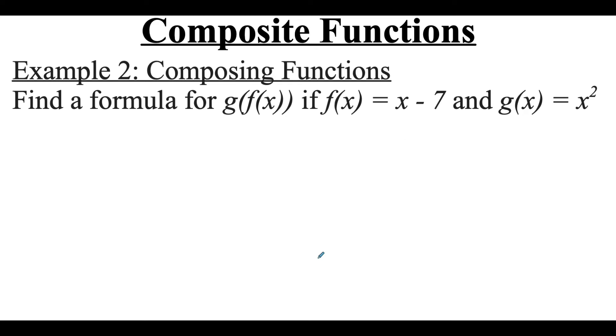Now in the previous example we did f of g of x. On this one we're going to do g of f of x, so we're working in the opposite direction. We start with the function g, which is x², and we're going to plug in the function f, which is x - 7. Where the x is in this function, we plug in x - 7, so we end up getting (x - 7)², keeping that squared power on the whole thing.